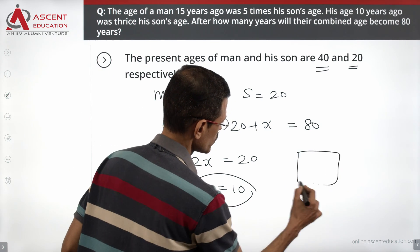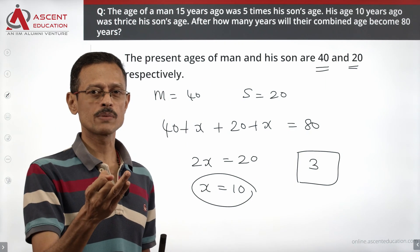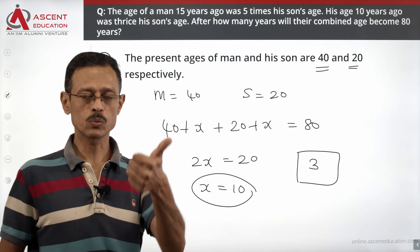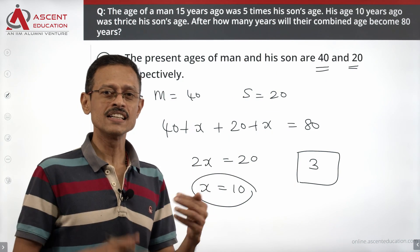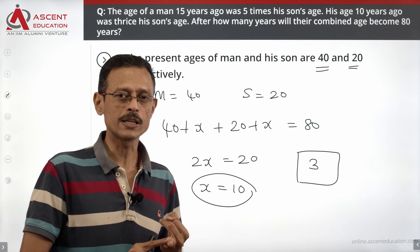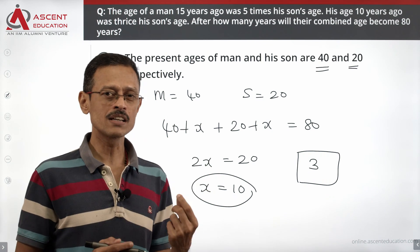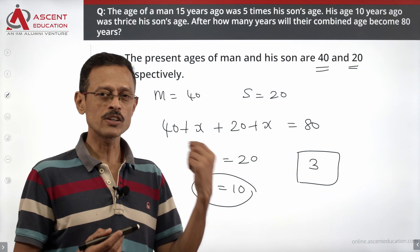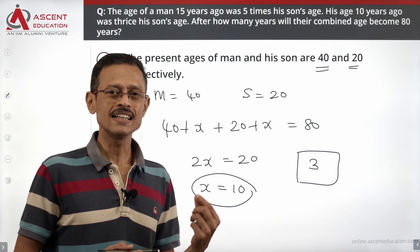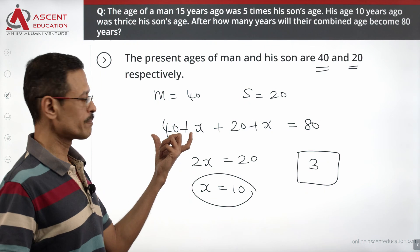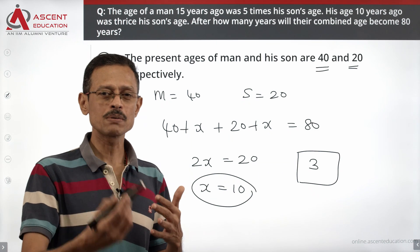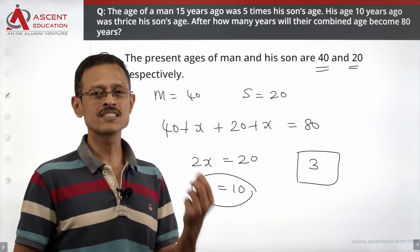Choice 3 is the correct answer to this question. Quick recap: first, we assigned variables — m for present age of the man, s for present age of the son. First piece of information, 15 years back, gave us equation 1. Second information, 10 years back, gave us equation 2. We solved the two equations and found s equals 20, then deduced m equals 40. The man's present age is 40, son is 20. Setting up (40 plus x) plus (20 plus x) equals 80 and solving for x, we get x equals 10 years. Choice 3 is the correct answer.